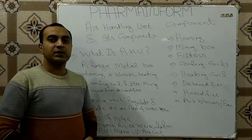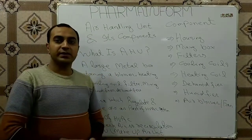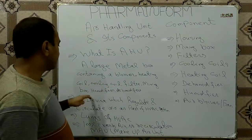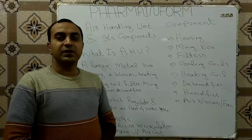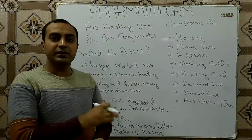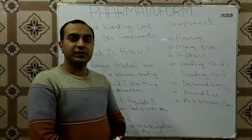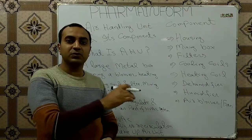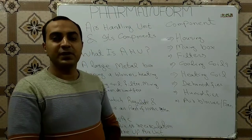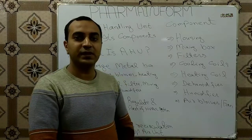What is AHU? We can define AHU as a large metal box containing a fan or blower, cooling coil, heating coil, filters, mixing box, humidifiers or dehumidifiers. In simple words, AHU is a large metal box which consists of different components for purification and conditioning of air. For your concept, when we look at the roof of different buildings we usually see a large blue box — that large box is an air handling unit.